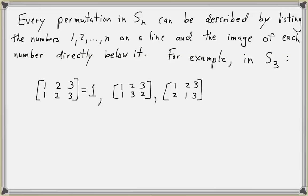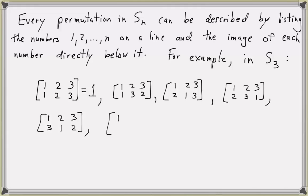Another permutation sends one to two, two to three, and three to one. One can get mapped to three, two gets sent to one, and three gets sent to two. The last permutation sends one to three, two gets sent to itself, and three gets sent to one. These are the six possible permutations in S_3, so S_3 is the set containing these six bijections.